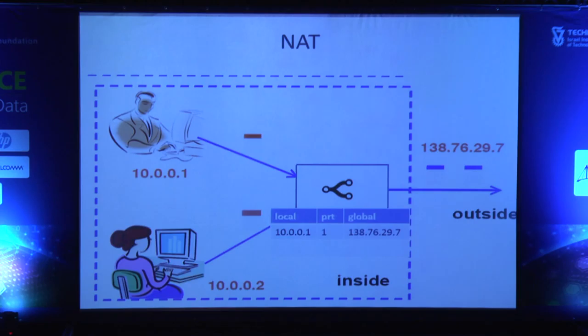The simplest example of a middle box is a NAT. We all have it at home: you have a local IP address at home and a global IP address. When you send messages outside, they are translated into global addresses, and when they come back, they are translated back. That's a simple kind of middle box.